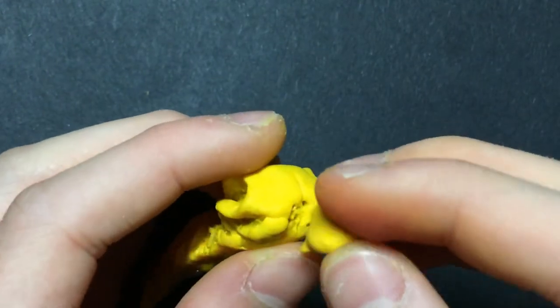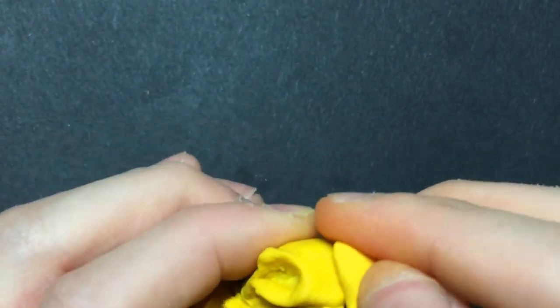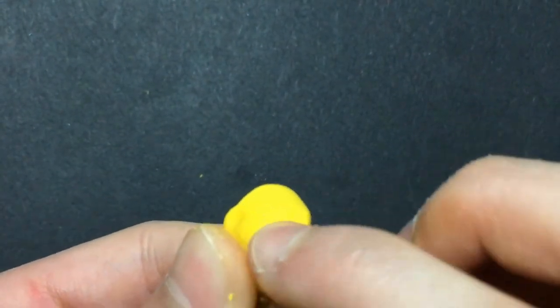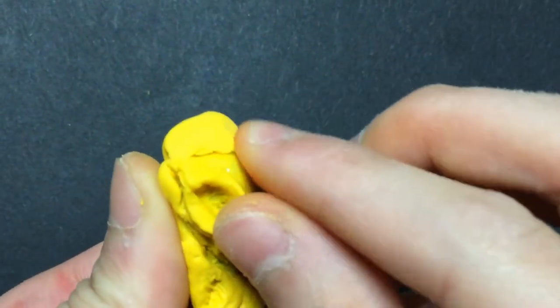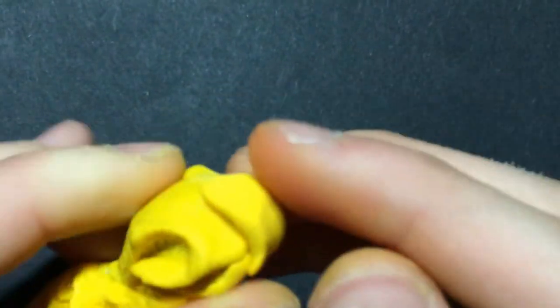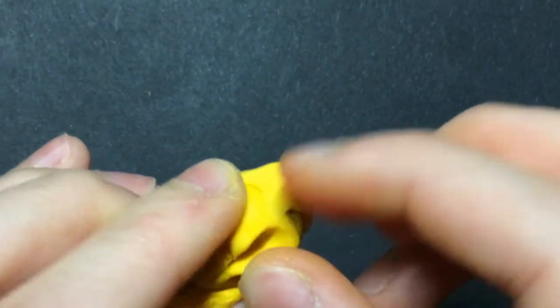At this point, I noticed that the skull wasn't bulbous enough, so I smushed on a big blob of Fimo, and whilst you could again use some tinfoil, this time the added weight will help balance out the skull.